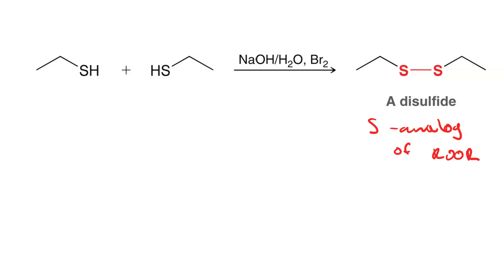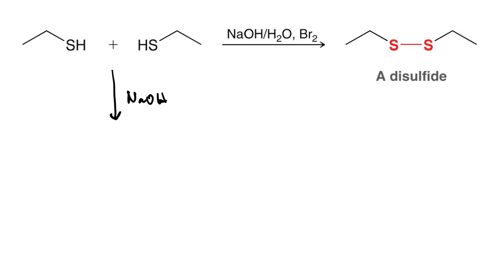Let's look at the mechanism. In the first step, hydroxide deprotonates the thiol. This gives a thiolate. Thiolate is the conjugate base of a thiol. It is the sulfur analog of an alkoxide. This particular compound here is ethane thiolate.